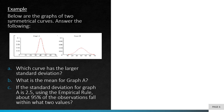Here is another example. Below are the graphs of two symmetrical curves. Which curve has the larger standard deviation? If you remember, standard deviation is a measure of dispersion, so a larger standard deviation means the values are much wider, more spread out, and more scattered from the mean. In this question, curve B has the larger standard deviation.